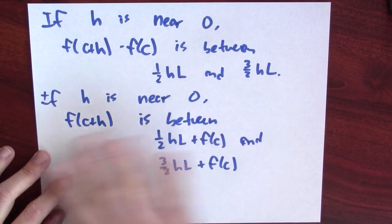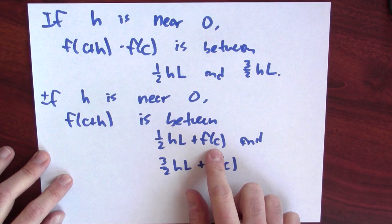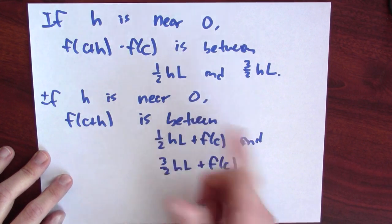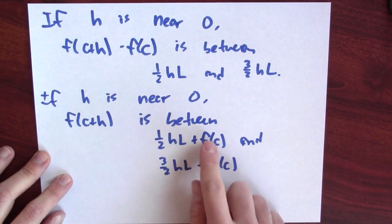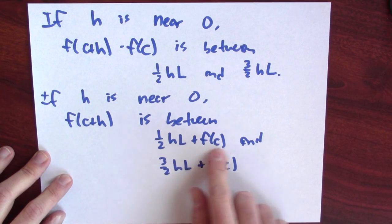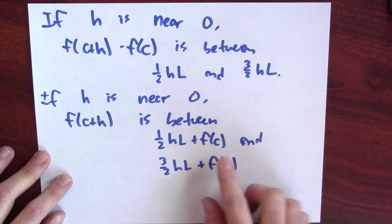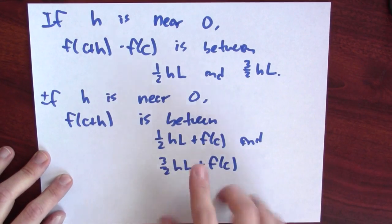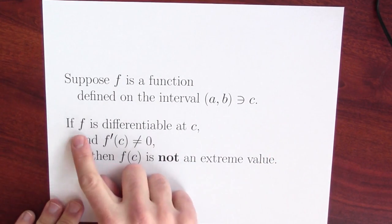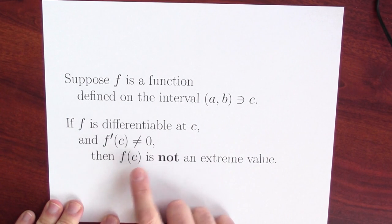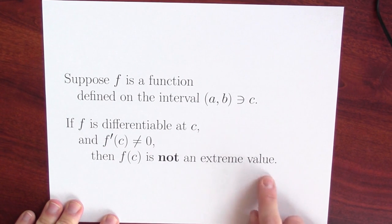That means that f of c can't be a local maximum. What if l is positive but I picked h to be negative but real close to 0? Then f of c plus h being between these two numbers, f of c plus h must actually be less than f of c. That means that f of c can't be a local minimum. You play the same game when l is negative. So what we've shown is this: if a differentiable function has non-zero derivative at the point c, then f of c is not an extreme value.